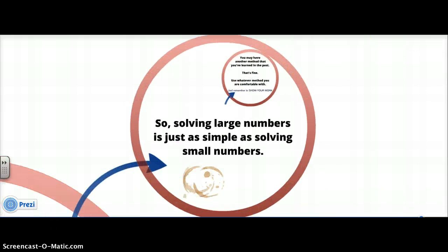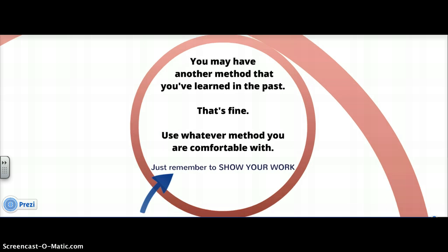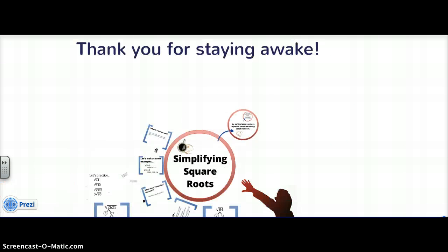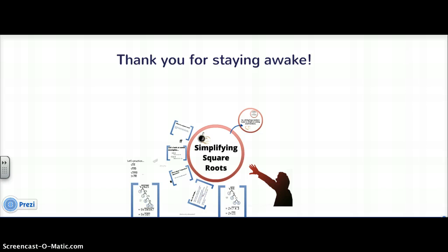Solving large numbers is just as simple as solving small numbers because you're allowed to use a calculator. Start by dividing by 2; if 2 doesn't work, go to 3; if 3 doesn't work, go to 5; if 5 doesn't work, go to 7, and keep going. You may have another method — like finding the greatest perfect square factor — and that's fine. Use whatever method you're comfortable with, just remember to show your work. Thank you for staying awake. Have a great day.